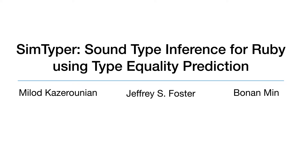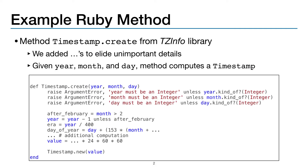Hi, my name is Milad Khazarunyan, and I'll be talking about SimTyper, our new system for inferring type annotations in Ruby programs. We'll start by introducing our running example, which is this method timestamp.create, which we took from tzinfo, one of the benchmarks we use.